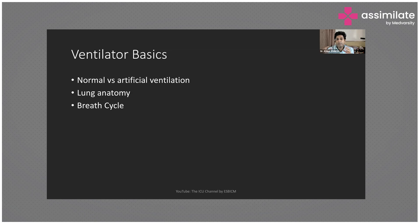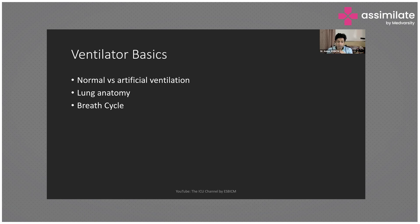In the parenchyma we talk about stretchability — the alveolar stretch — and we talk about compliance. So broadly we classify the lung into airway and parenchyma: one constitutes the resistance and the other constitutes the compliance of the system. This is not very important for today's session, but I want everyone listening to focus, because understanding the breath cycle is very very important.